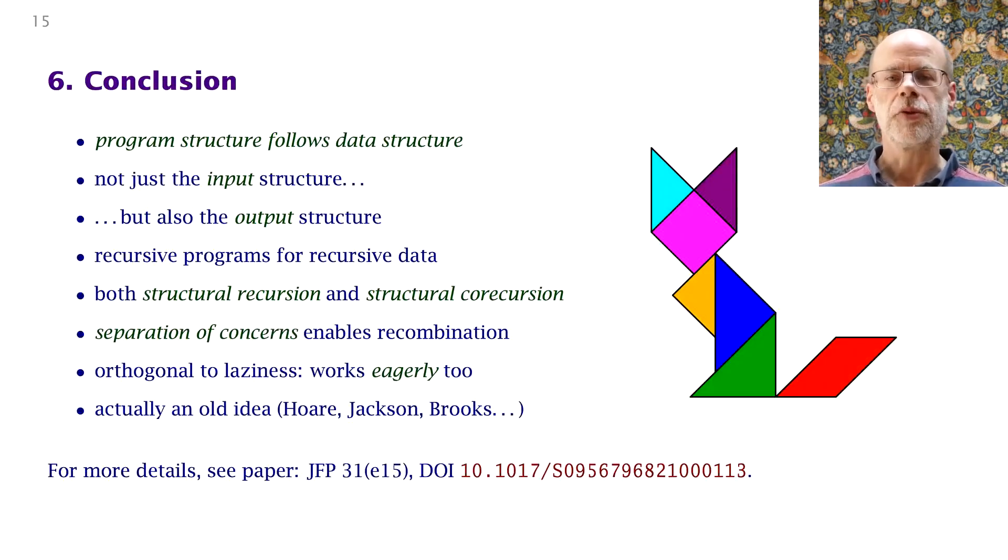So that's my message. Program structure follows data structure, but we should not limit ourselves to considering input structure. We should consider the output structure too. If we have recursively structured data, that's likely to lead to recursively structured programs. But there might be structural recursion if they're over the input data, or structural co-recursion if they're over the output data. Once you've identified those two separate gadgets, structural recursion and structural co-recursion, you can put them together in new and interesting ways. And in particular, you can get divide-and-conquer algorithms by combining structural co-recursion and structural recursion.